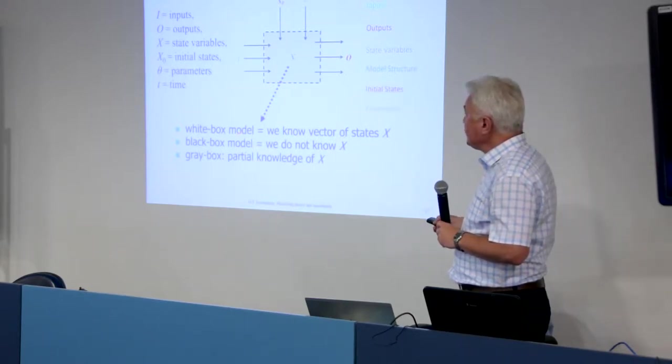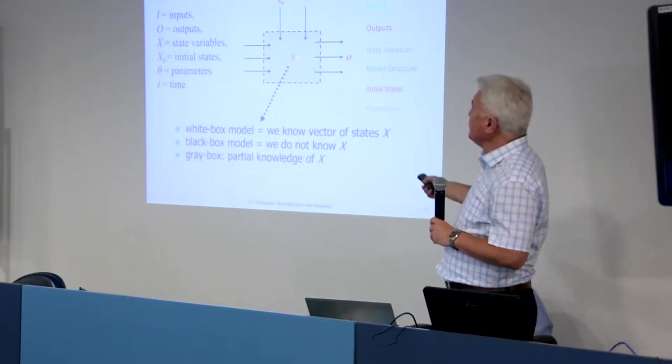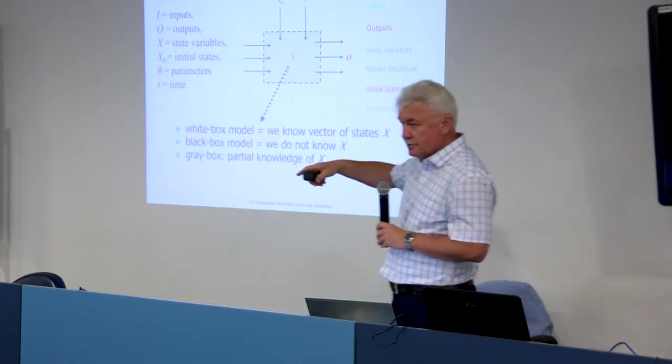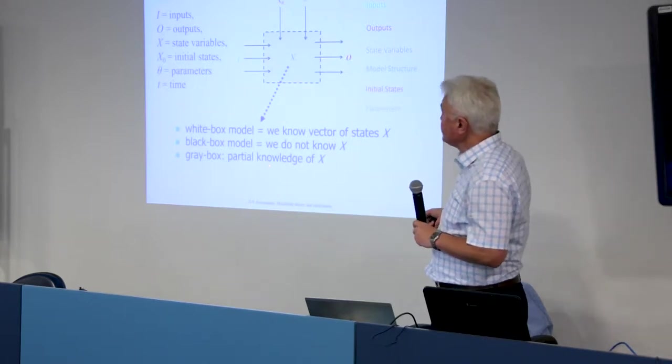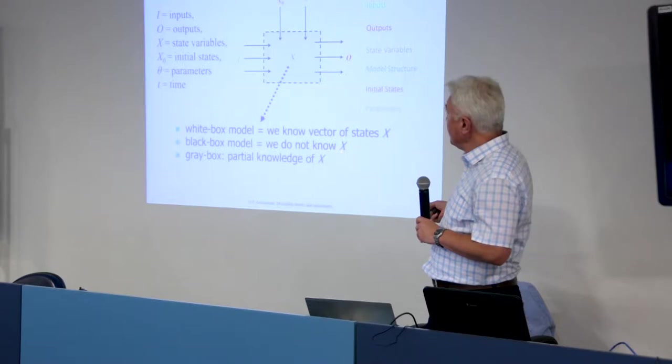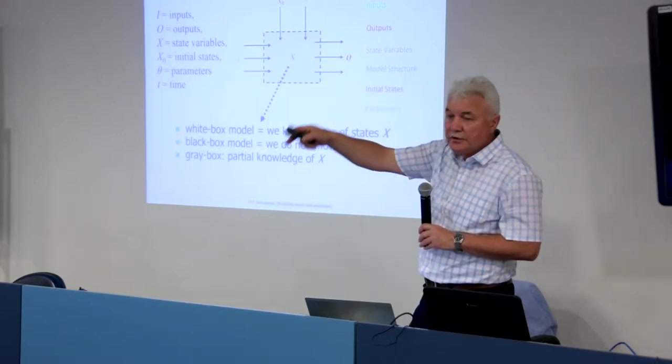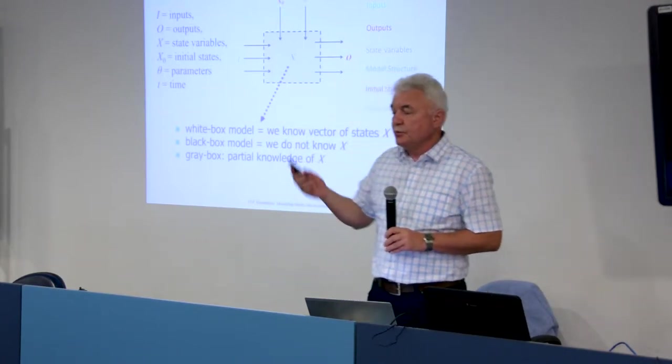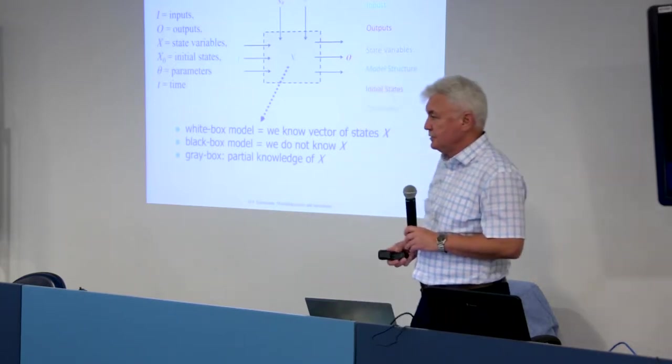Now, white box model, when we know vector of states. Black box model, then we don't know x, we know only input output. That's why it's called black box. And gray box, it's partial knowledge. So very often, we'll have partial knowledge of x, or no knowledge.